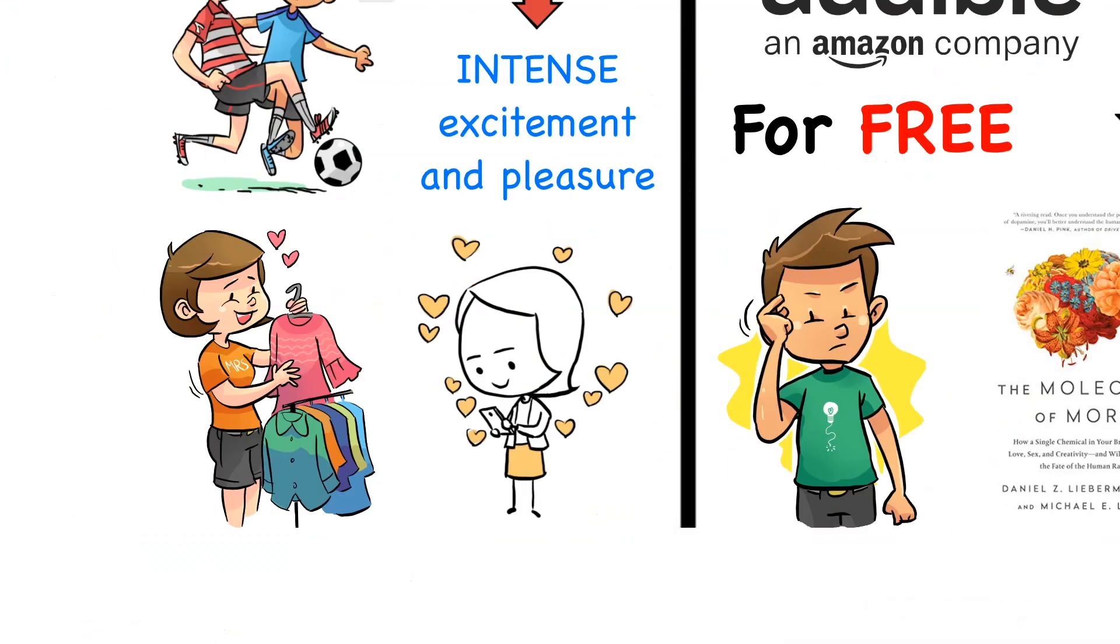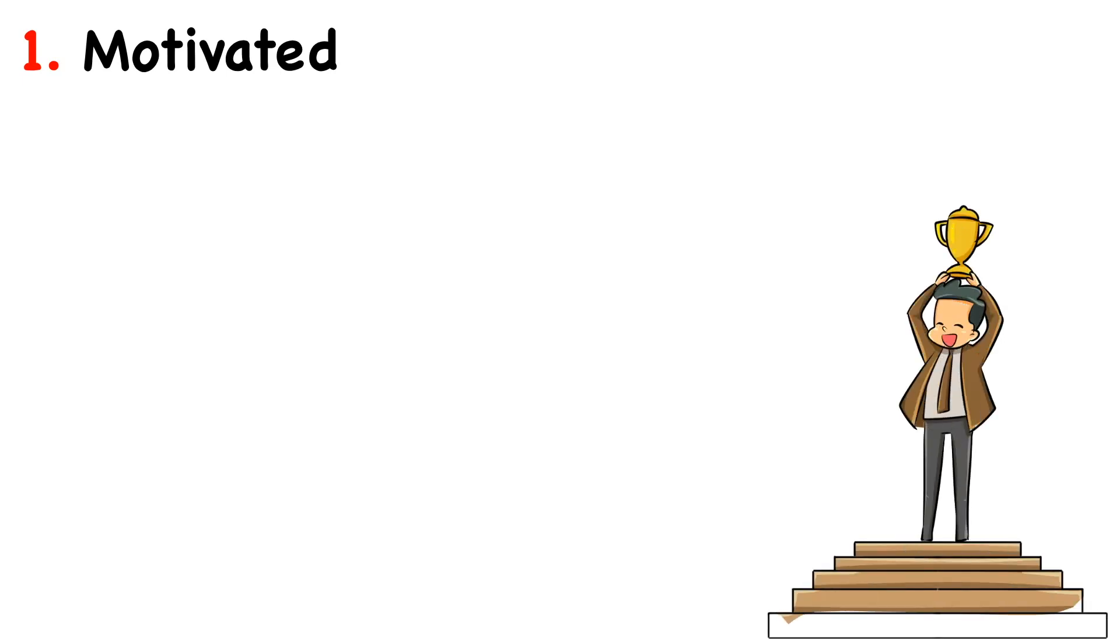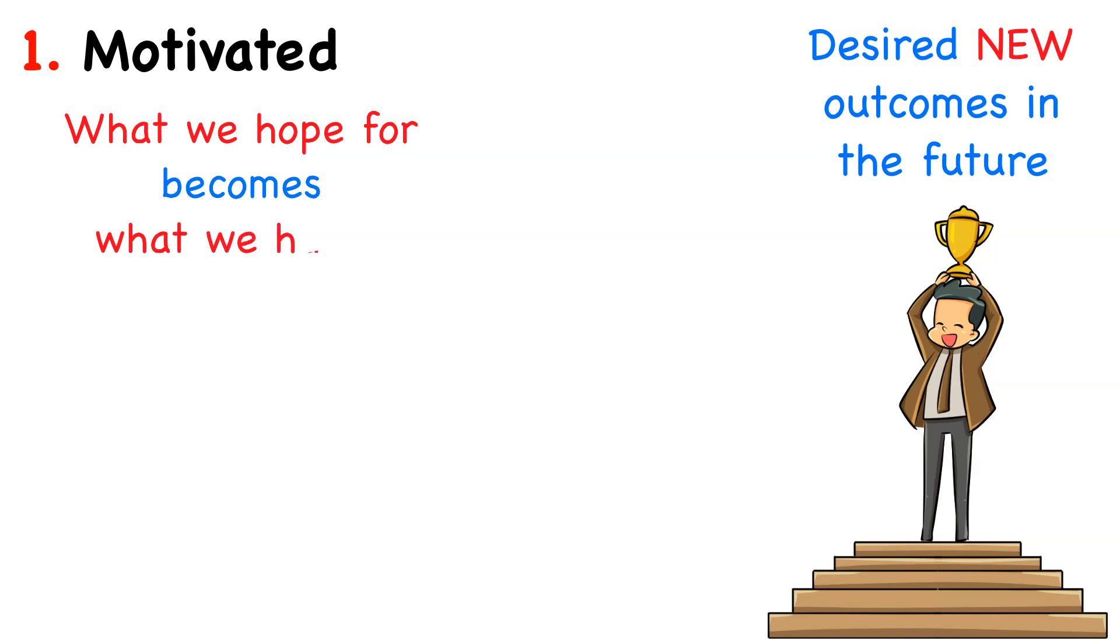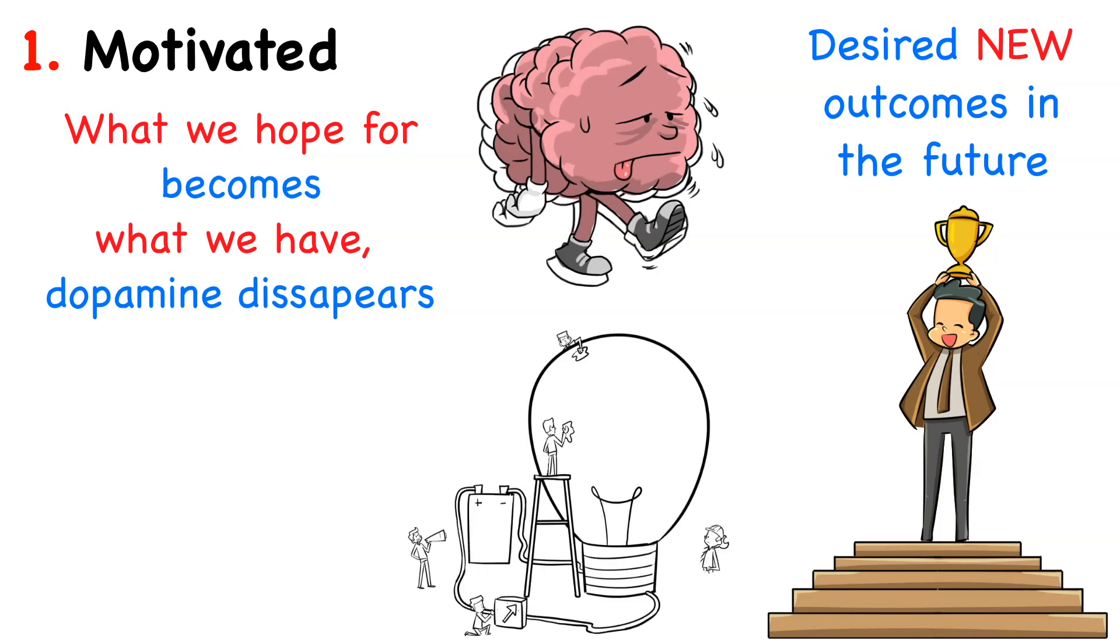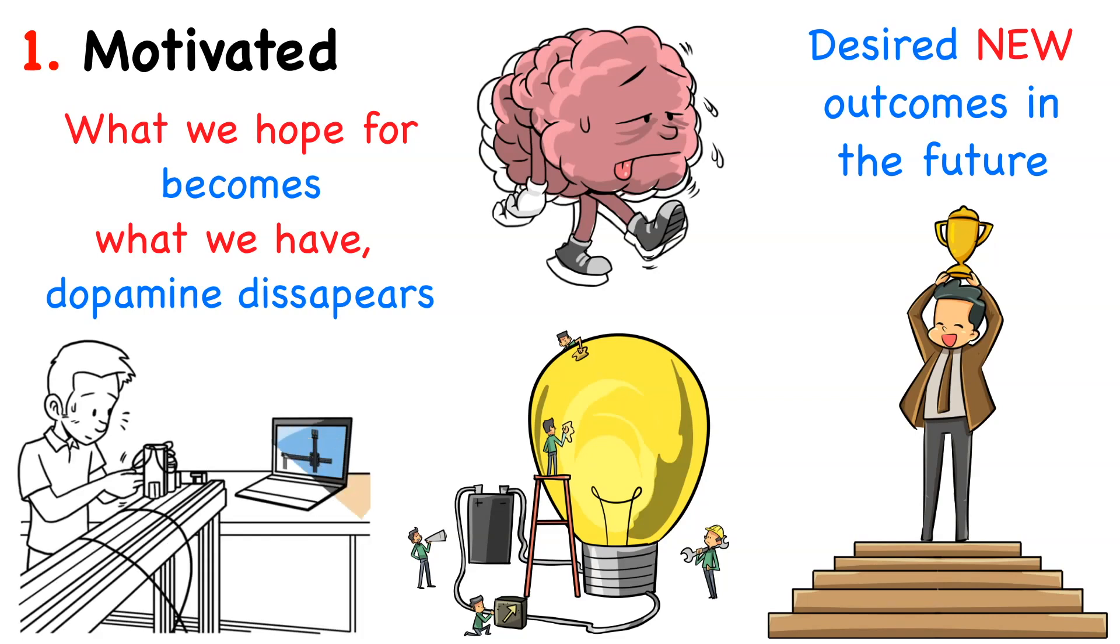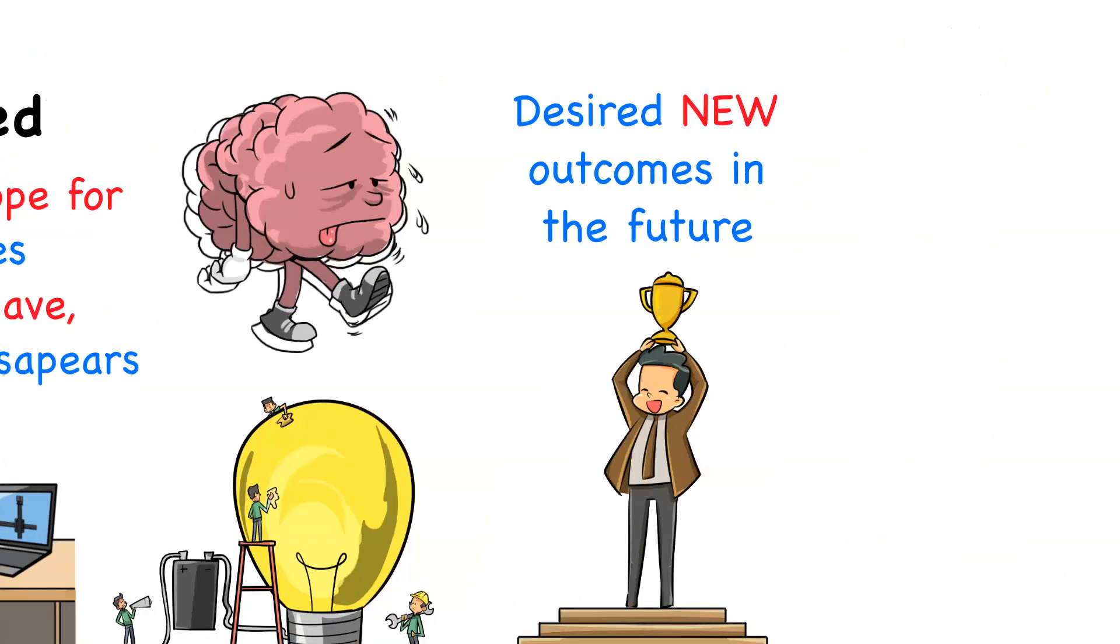Moving on, how does dopamine make you feel? One, motivated. Dopamine is related to the new rewards we could achieve in the future. That's why it's referred to as the motivation molecule. It helps us achieve desired new outcomes in the future. The problem is that, as soon as what we hope for becomes what we have, dopamine disappears. This could lead people to forever chase new things only to find themselves completely dissatisfied as soon as they obtain them. Dopamine gives you the motivation needed to come up with new solutions to your existing problems. Dopamine makes the world a better place because motivation is what leads to invention and therefore to changing the world.